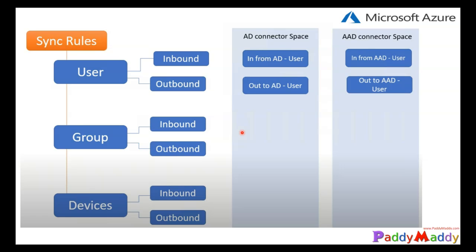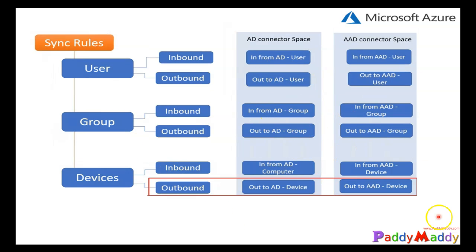That means all HR department-specific users can be synced. Similarly, location and the rest can be done. These are the advanced-level configurations that can be configured at a later point. If you just understand the sync rules and how they work, this makes it easier for demo purposes. Within AAD Connect, for the outbound rules, there are 'out to Active Directory' for user objects as well as 'out to AAD user.' For groups and devices, similarly, there would be 'out to AAD' rules. For computer objects, in local AD it's called computer but in Azure AD it's called device - a slight name change but it remains the same.